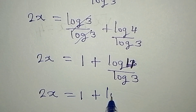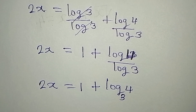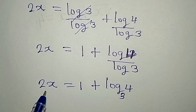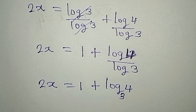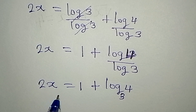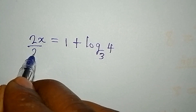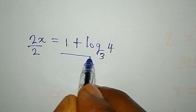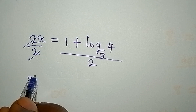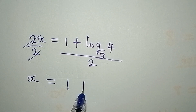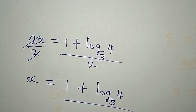...1 plus log 4 to base 3. This is not the end because we have to make x the subject. We need to remove the 2 from here, so we divide both sides by 2. Then x is equal to 1 plus log 4 to base 3, everything over 2.